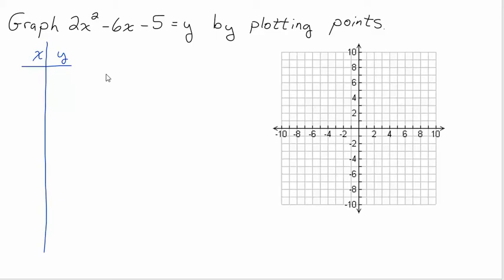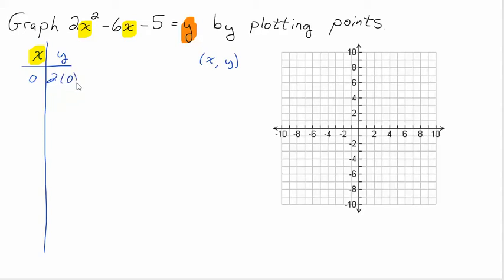Plotting points — we can do this with any type of equation. All that means is I'm going to pick some value of x, whatever value I want, and I'm going to put it in for x. That's going to give me an output, a y. And from that information I'm going to get an x, y point that I can come over here and graph. You can pick any number you want to start. I like to pick zero because zero is an easy number to do arithmetic with.